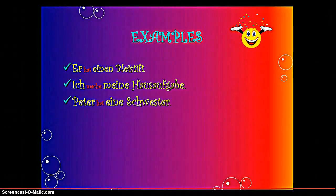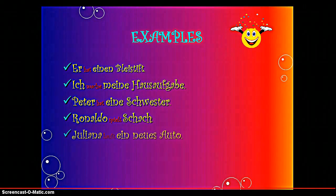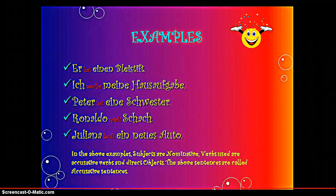'Peter hat eine Schwester.' 'Ronaldo spielt stark.' 'Juliane kauft ein neues Auto.' In the above examples, subjects are Nominative, verbs used are Accusative verbs, and there are direct objects. The above sentences are called Accusative sentences.